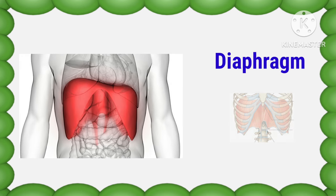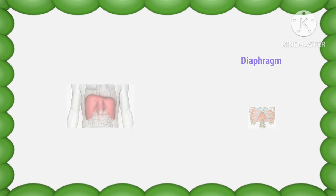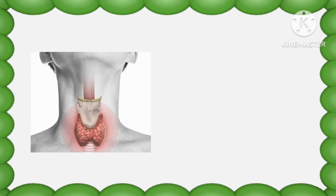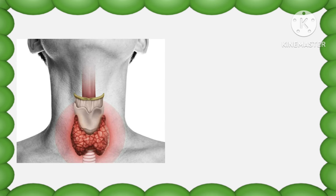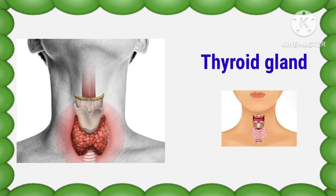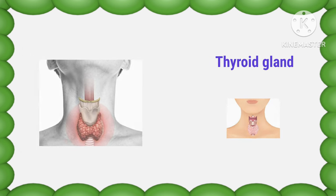Diaphragm — D-I-A-P-H-R-A-G-M — diaphragm. Thyroid gland — T-H-Y-R-O-I-D G-L-A-N-D — thyroid gland. This is our thyroid gland.